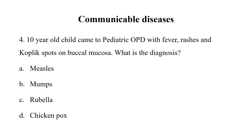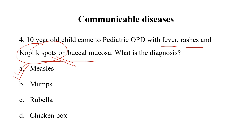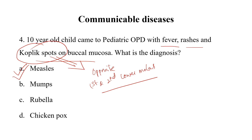A 10-year-old child came to pediatric OPD with fever, rashes, and Koplik spots on buccal mucosa. What is the diagnosis? Options are Measles, Mumps, Rubella, and Chickenpox. The diagnosis is definitely Measles, because measles presents with fever, maculopapular rashes, and Koplik spots. Koplik spots are the most significant finding of measles — these are small bluish-white spots on a red base, seen opposite the first and second lower molars, appearing even one or two days before the rash in the prodromal stage.